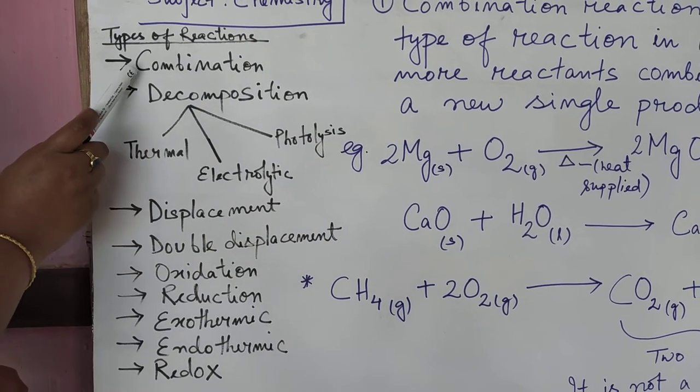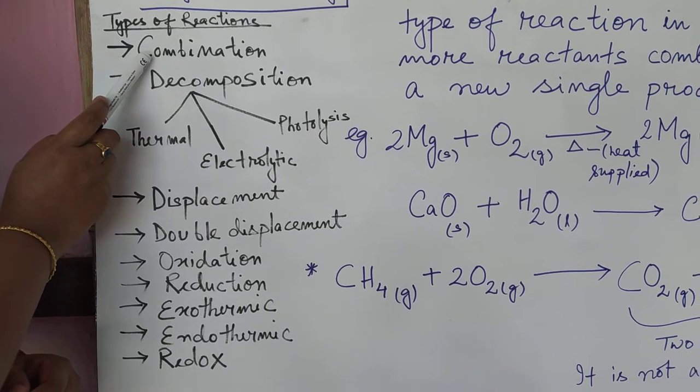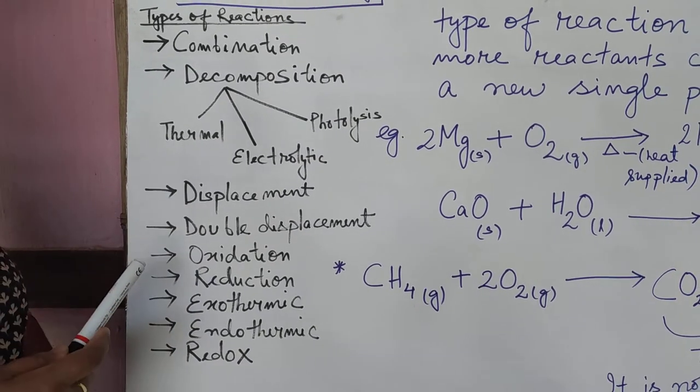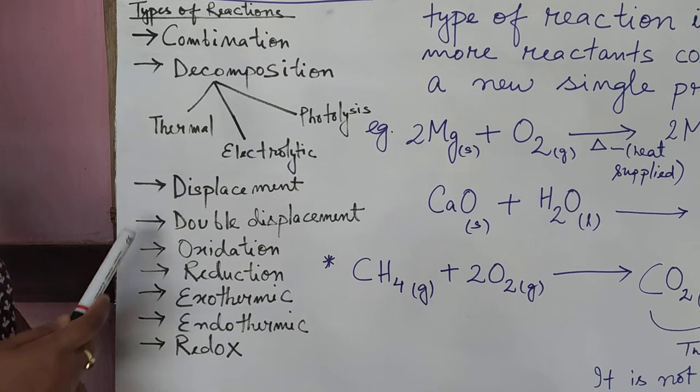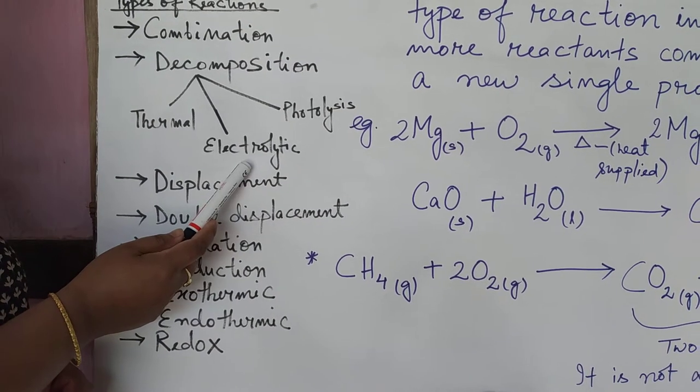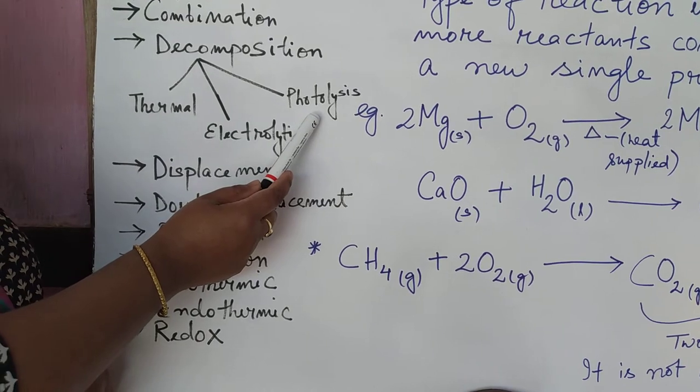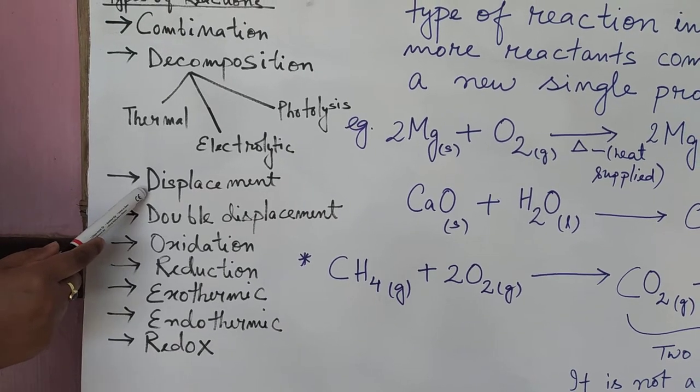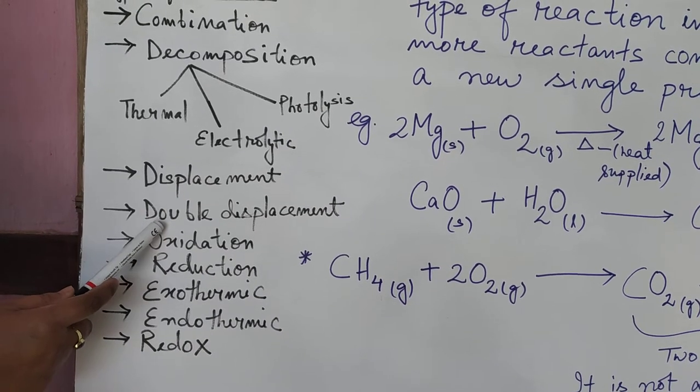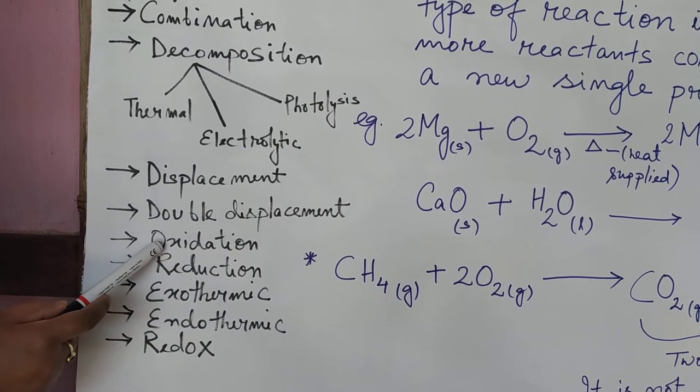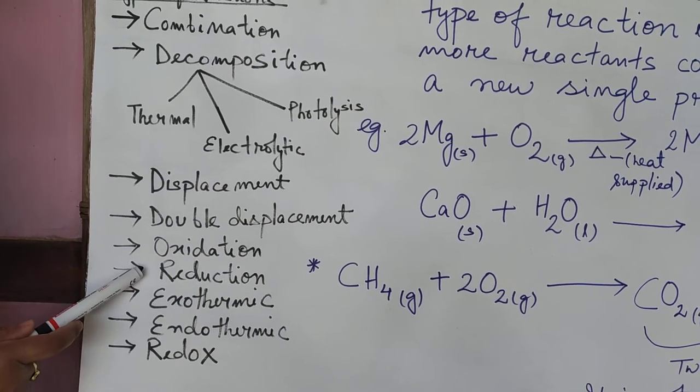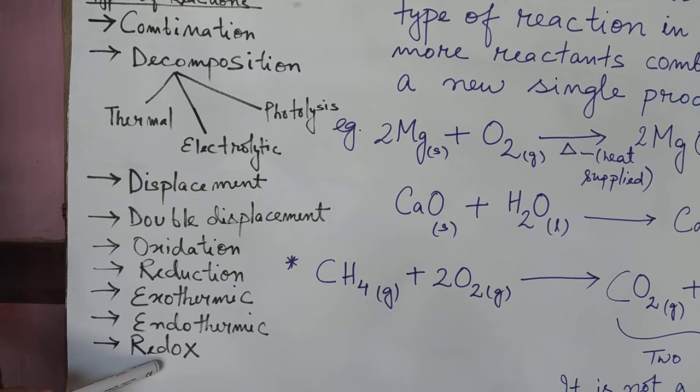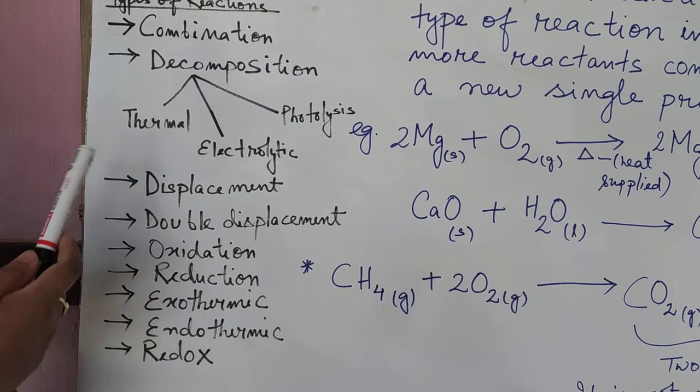Look here, the first type is called combination reaction. Second type, decomposition reaction. And in this decomposition reaction you can again further classify as thermal decomposition, electrolytic decomposition, photolytic decomposition or photolysis. And again for third type that is displacement reaction and double displacement reaction, oxidation reaction, reduction reaction, exothermic reaction, endothermic reaction and redox reaction.